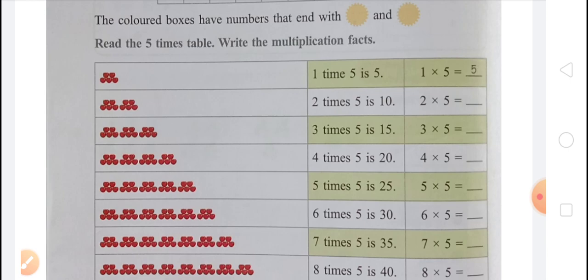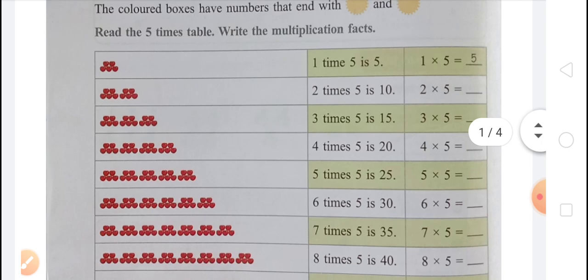In next, there will be 4 multiplied by 5 equals 20, because 4 is the number of groups and 5 is the number of apples in each group. In next, there will be 5 multiplied by 5 equals 25, because 5 is the number of groups and another 5 is the number of apples in each group. In next, 6 multiplied by 5 equals 30, because 6 is the number of groups and 5 is the number of apples in each group. So multiplication fact will be 6 multiplied by 5 equals 30.